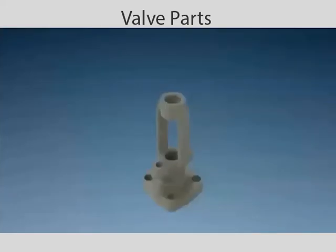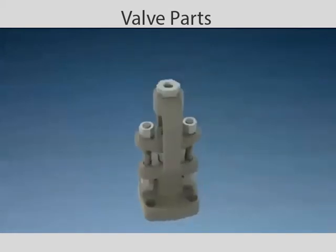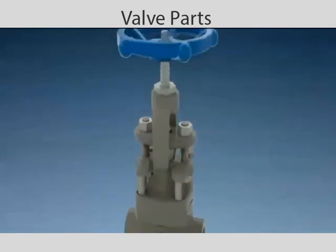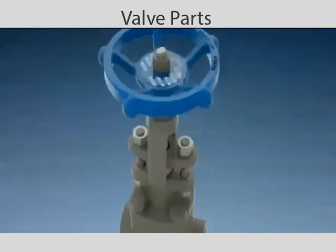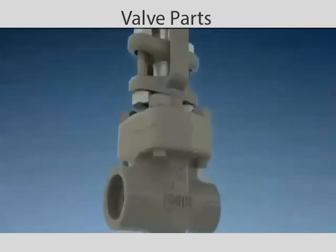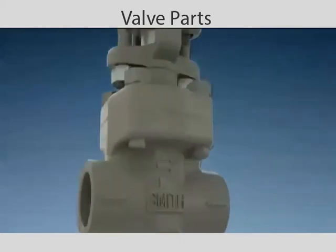Valves are composed of many parts, each with their own unique function. The upper half of the valve contains the operating gear, leakage prevention, and means of adjustment. The lower portion of the valve contains flow channels and the actual parts of the valve to start, stop, or throttle flow, including the disc and seat.